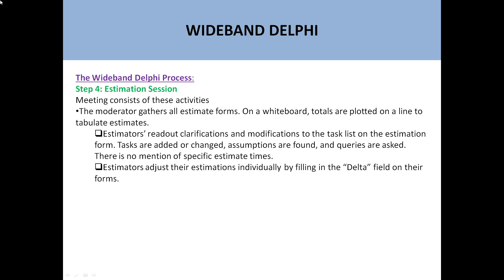Then comes the estimation session. This meeting consists of the following activities: the moderator generates all estimate forms and totals are plotted on a whiteboard to tabulate estimates. Estimators read out clarifications and modifications to the task list; tasks are added, changed, assumptions are found, and queries are asked. Estimators then adjust their estimates individually by filling in the delta field on their forms. Basically, we are now accumulating all the estimations from the individual three team members.